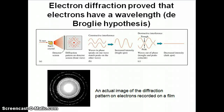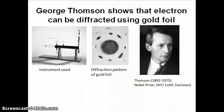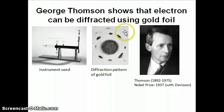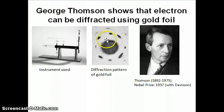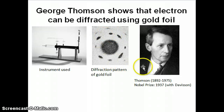Davisson and Germer were the first team to work on electron diffraction. The second scientist was George Thomson, who performed essentially the same experiment except he used gold foil as the target. He found a similar pattern: the white areas represent destructive interference and the dark areas represent constructive interference. He also observed a diffraction pattern, which can only mean that the electron has wave-like properties. Thomson and Davisson shared the Nobel Prize in 1937 for this experiment demonstrating that the electron is a wave.